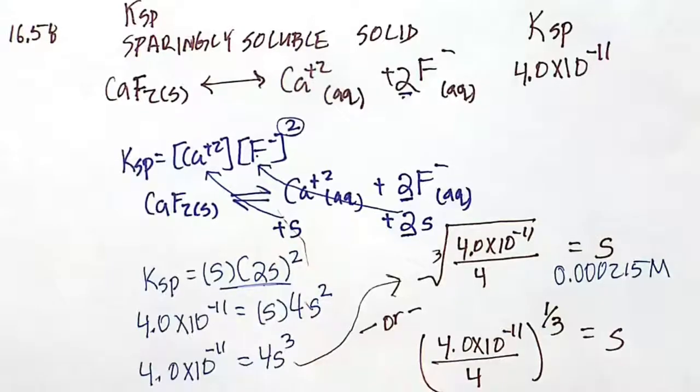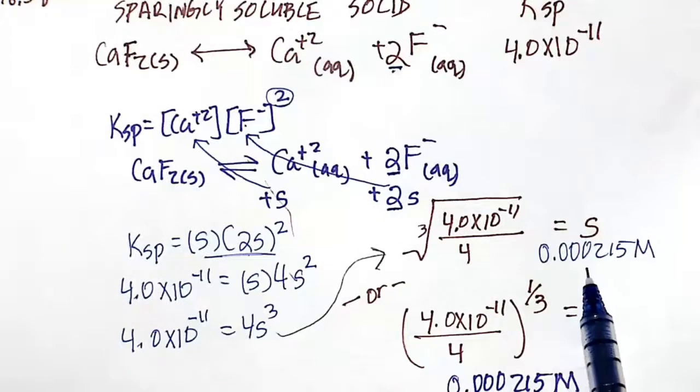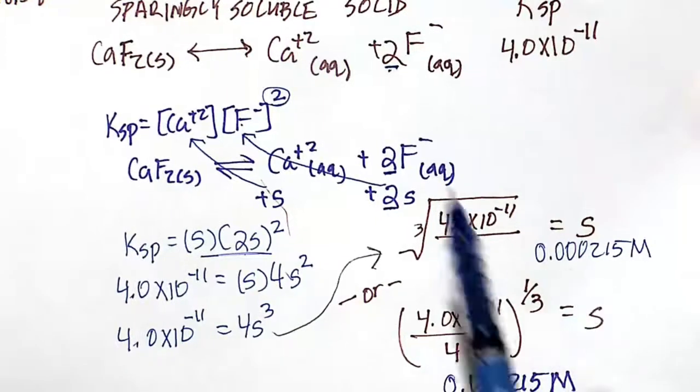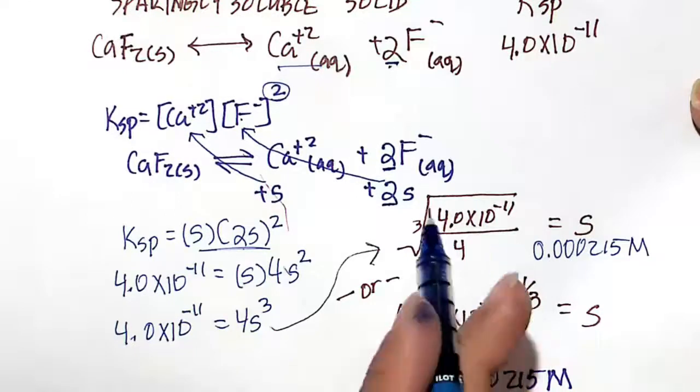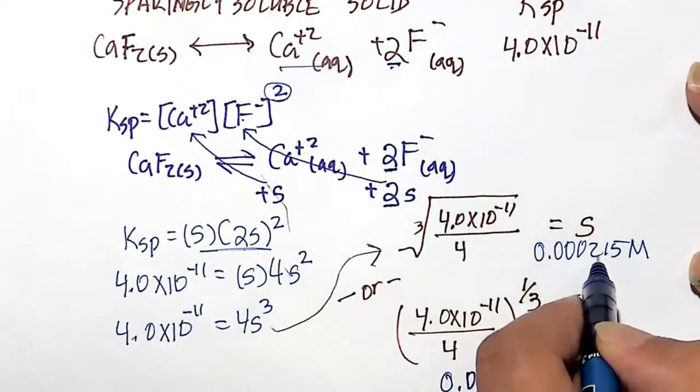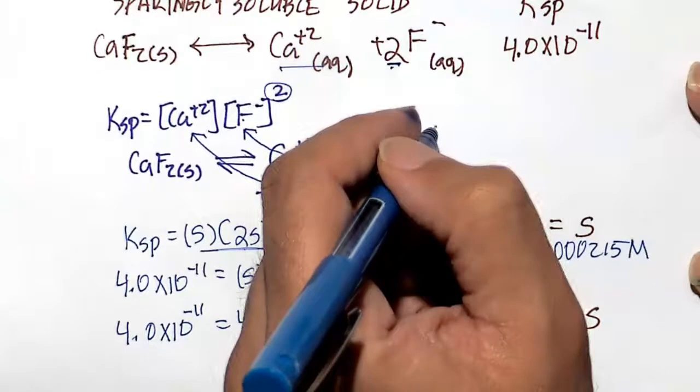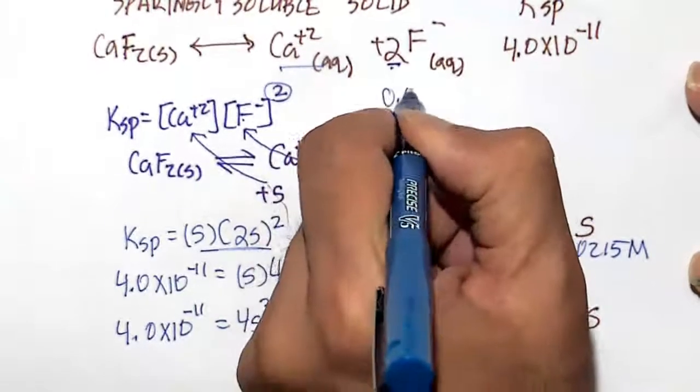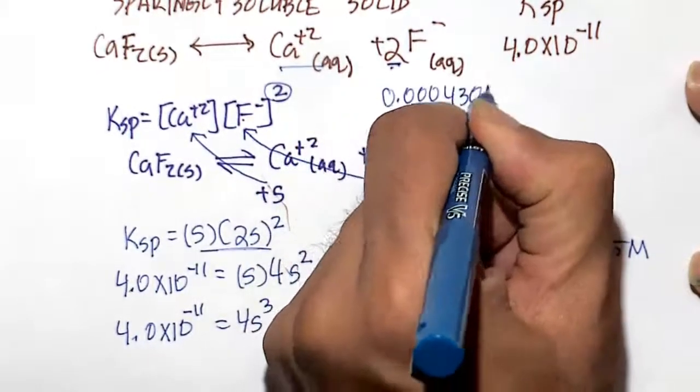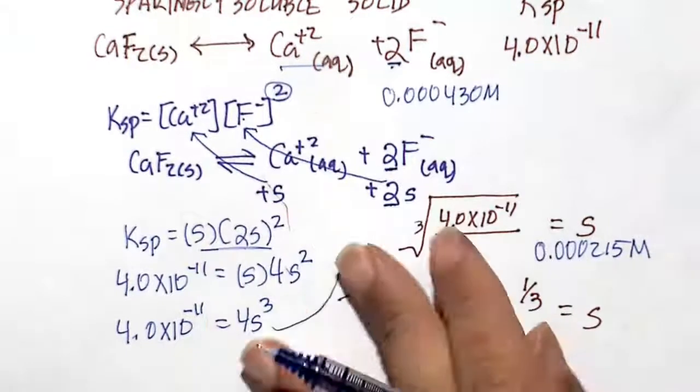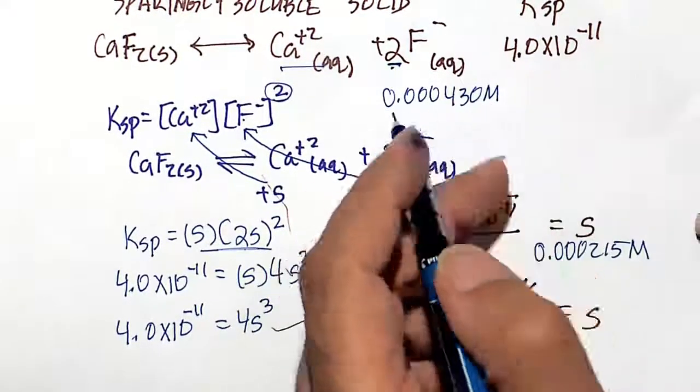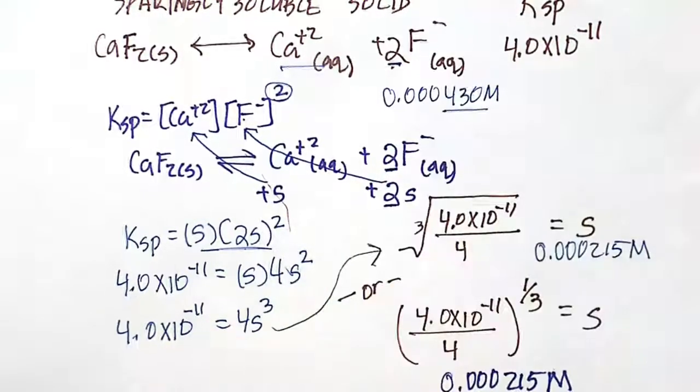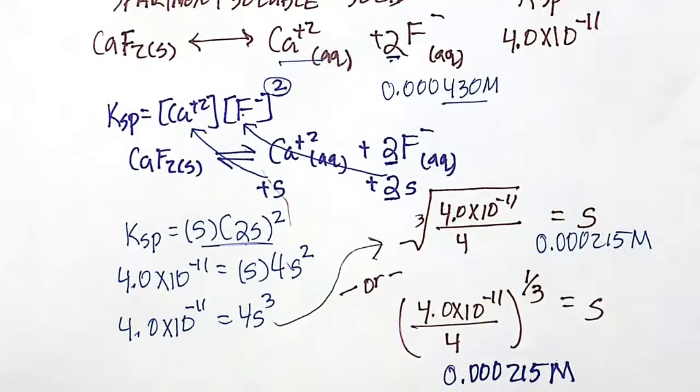So the solubility s in this problem is going to be 0.000215. Solubility of calcium ion is that. Solubility of fluoride ion that builds in water is going to be 2 times that. So that's going to be 0.000430. Don't forget the units of molar. Don't forget we have to multiply for fluoride ion s by 2 because there's 2 moles of f minus that is produced.